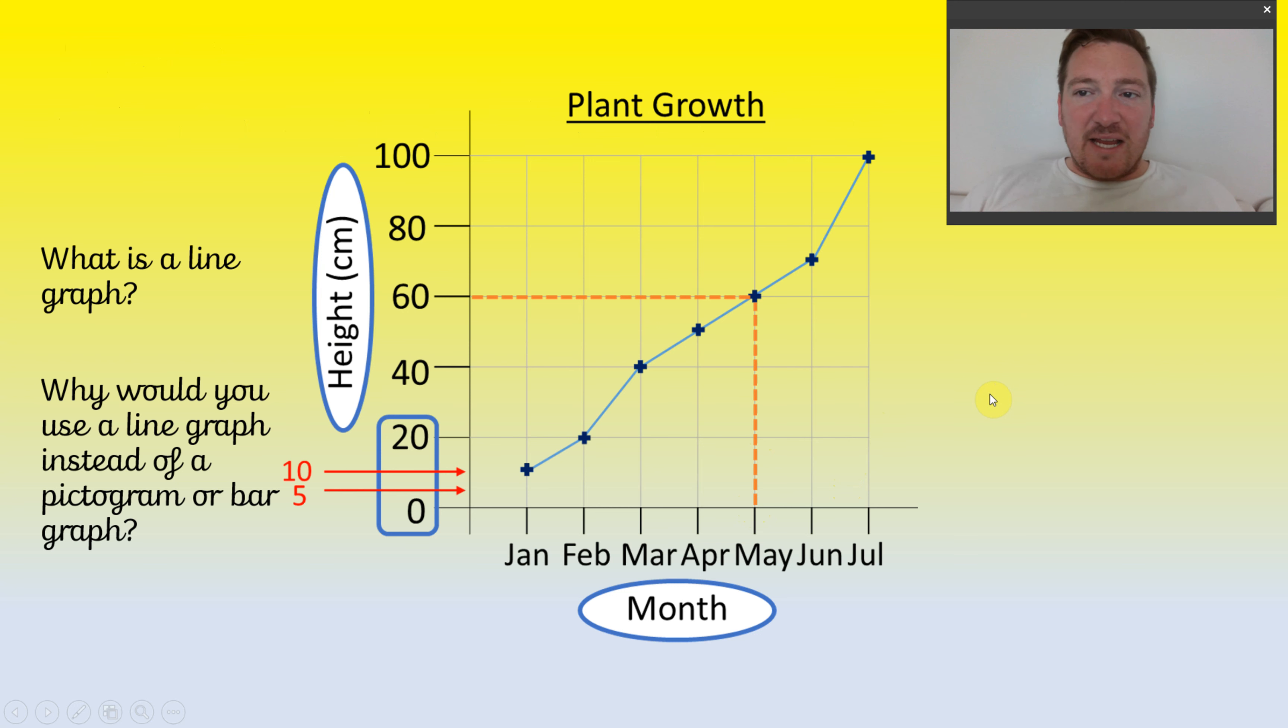So first of all, what is a line graph? And why do we use a line graph instead of say a bar chart or a pictogram? Now a line graph specifically looks usually at one variable and it tracks it over time.